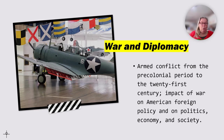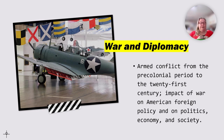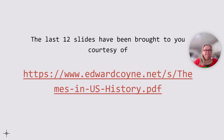Our next theme is war and diplomacy. Over our history, we have fought many wars for both our independence and the freedom of the world. Even when attempting to embrace neutrality, we have endeavored to help those fighting against tyranny, and eventually we have abandoned our neutrality in order to turn the tide of the fight against tyranny and toward freedom. Armed conflict from the pre-colonial period to the 21st century, and the impact of war on American foreign policy, politics, the economy, and society constitute the theme of war and diplomacy. These last 12 themes were brought to you by EdwardCoin.net, which I found to be an amazing resource.